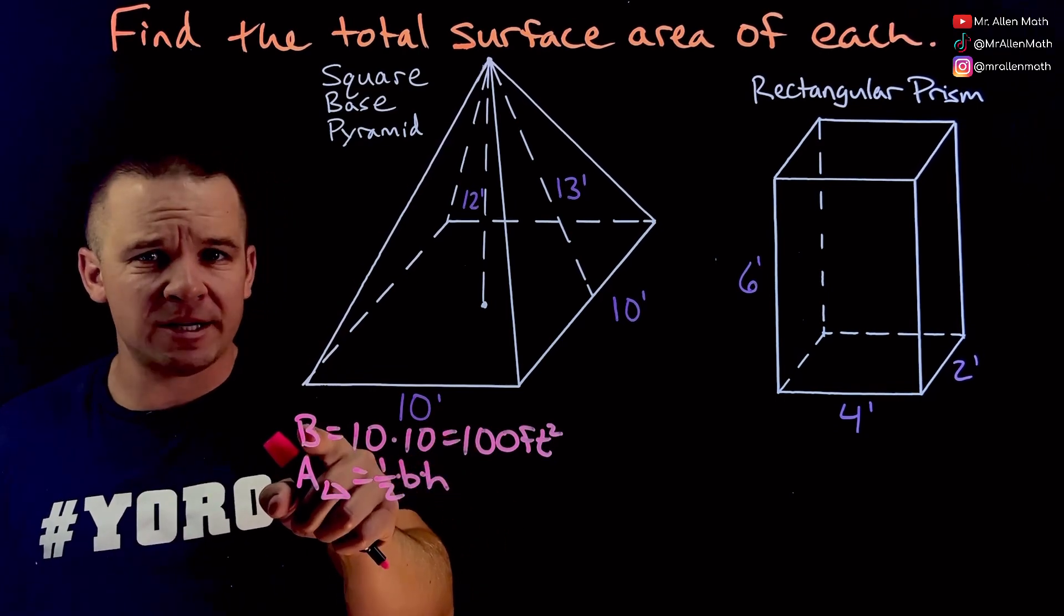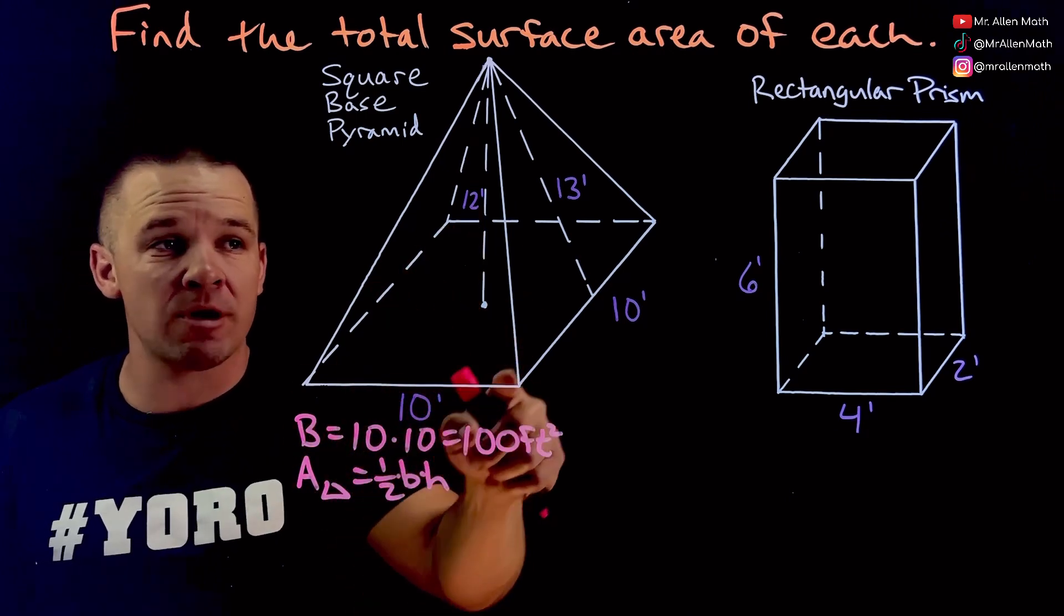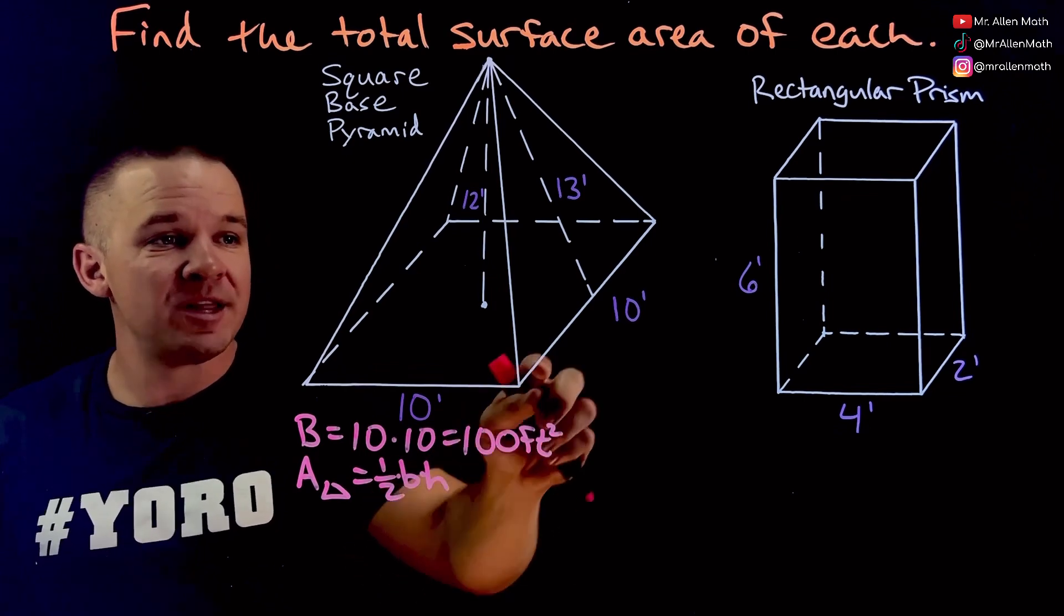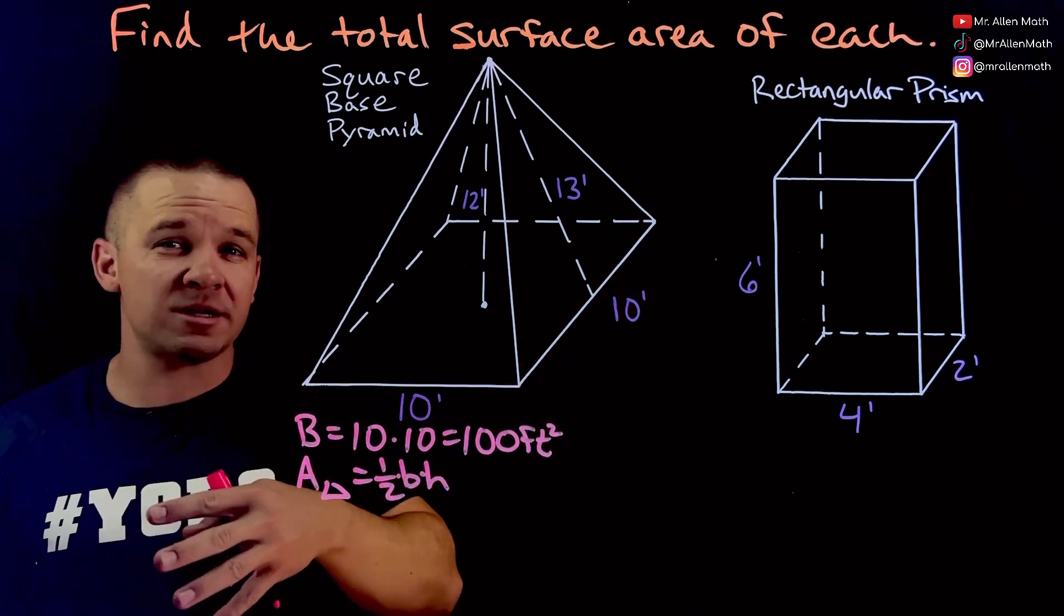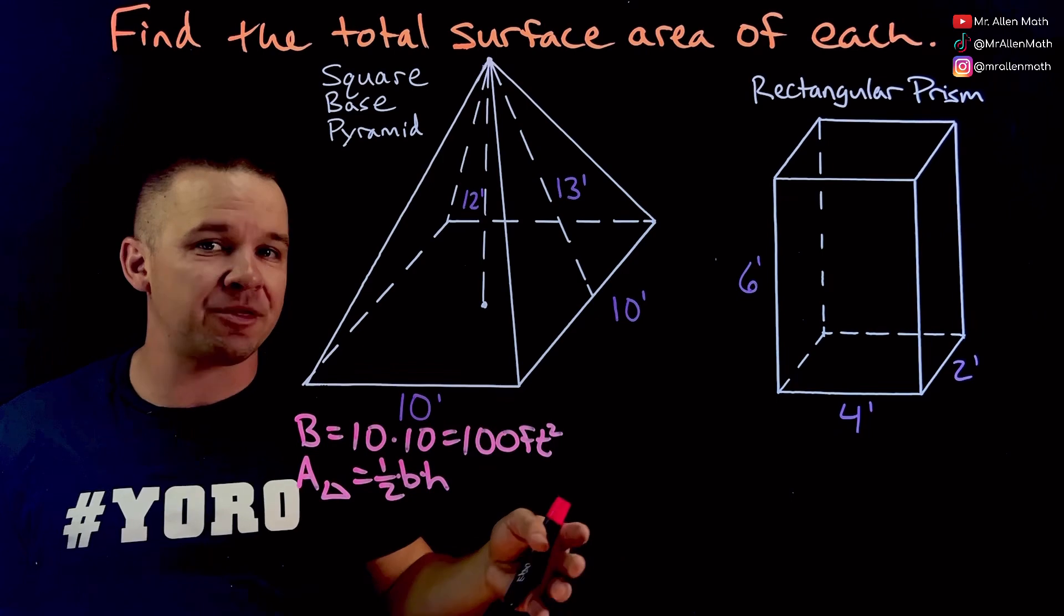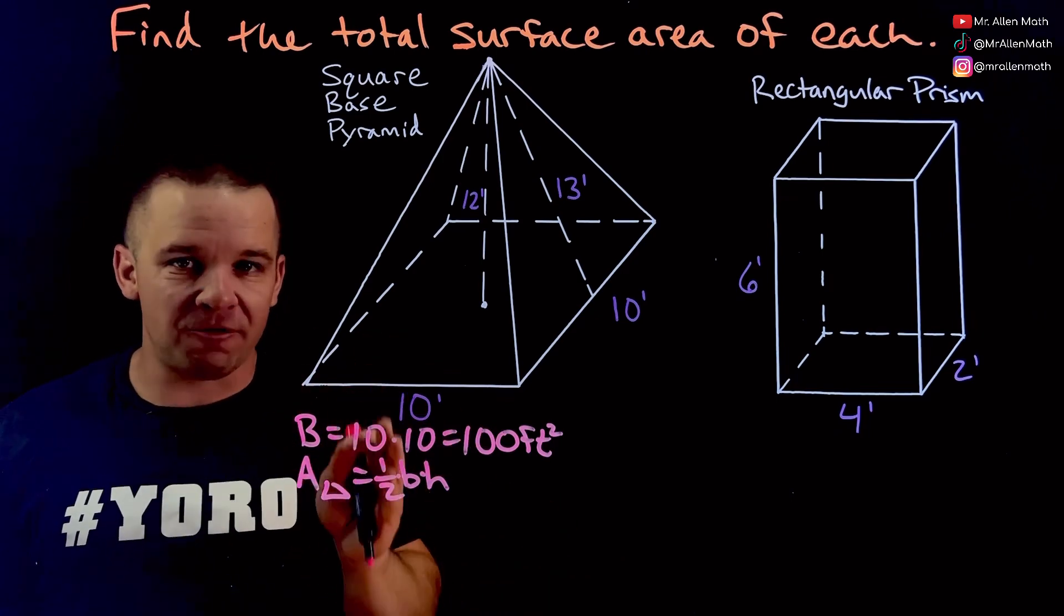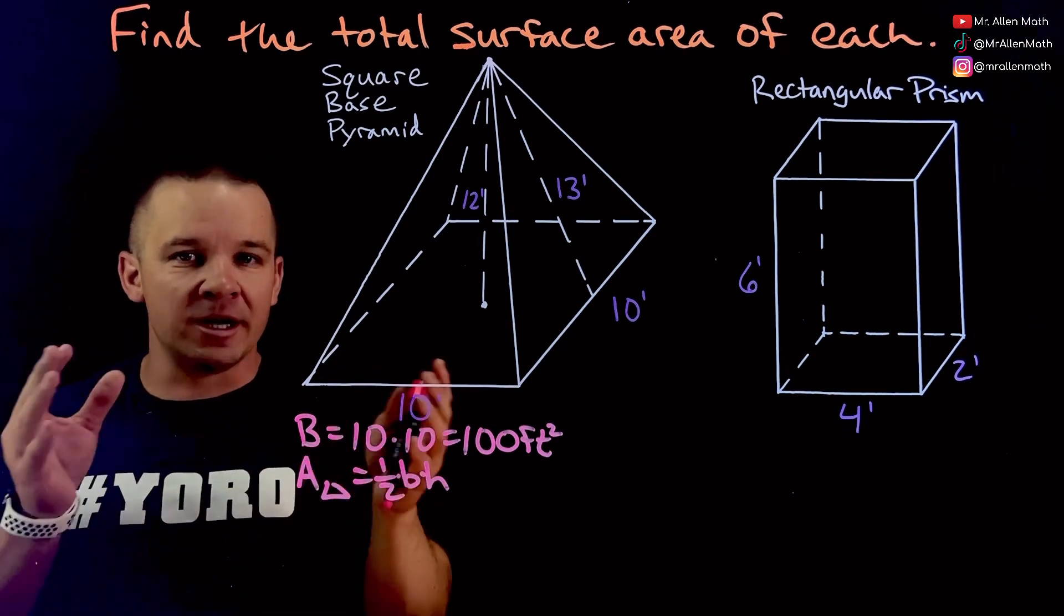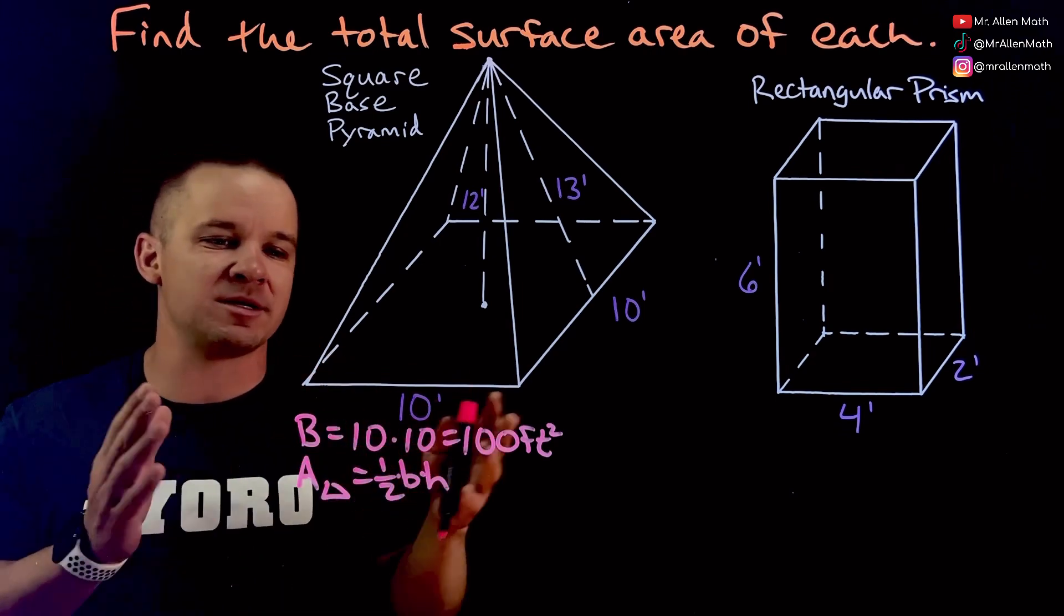Now notice I said base here but it's a capital B, it's because it's the area of the base of this solid. Little b lowercase b, that's a linear dimension. So the uppercase and lowercase letters in math do have significance to them, so be careful with that. Don't interchange them sloppily, there is meaning between lowercase and uppercase letters.